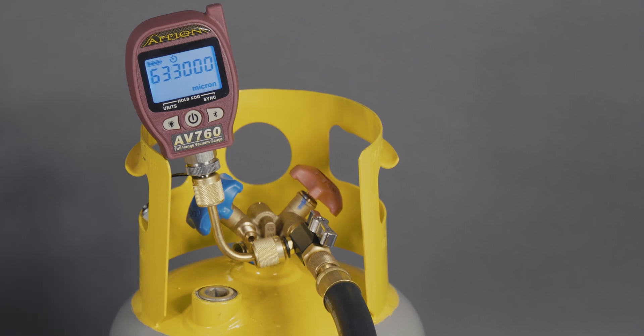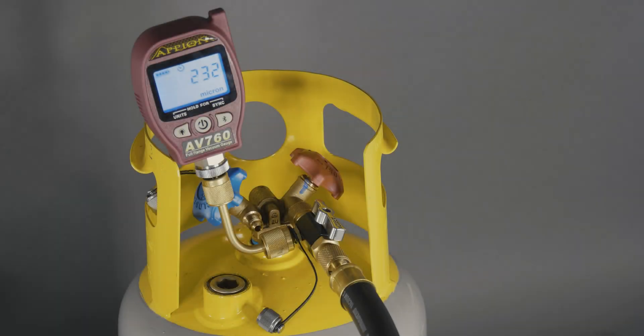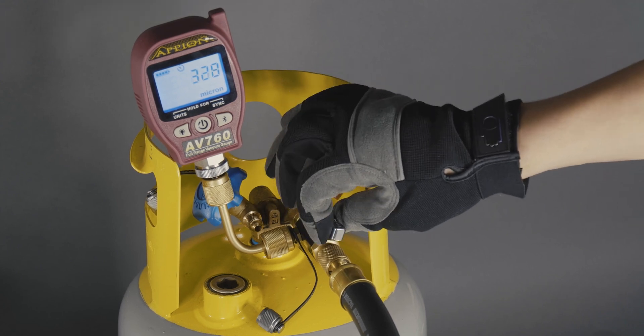As the pump begins to pull down, ensure there is a smooth transition from atmosphere down to below 200 microns. When the gauge reads close to 200 microns, begin opening and closing the ball valve to release any residual air molecules.